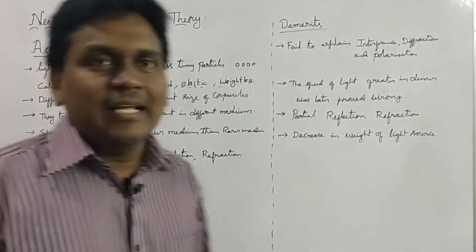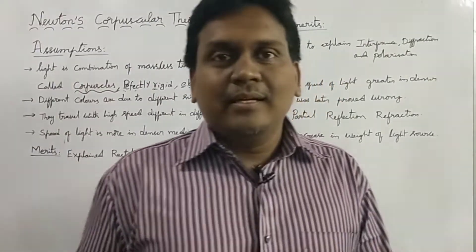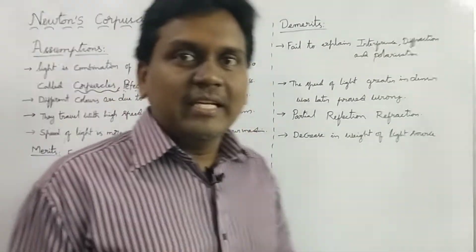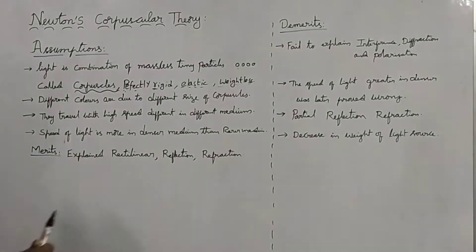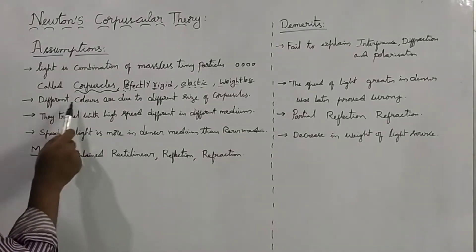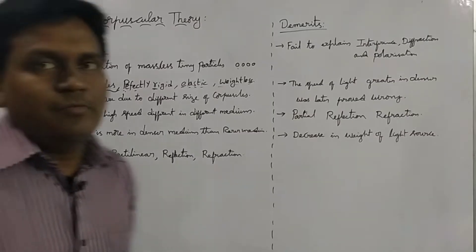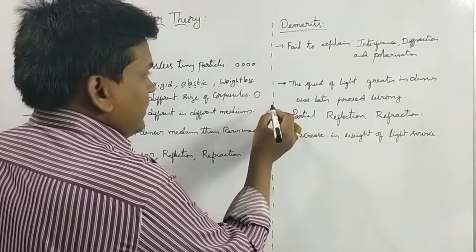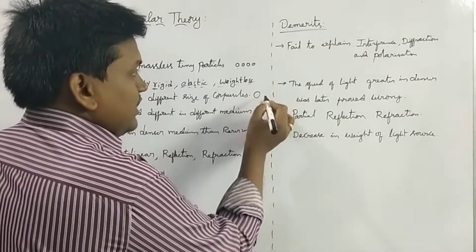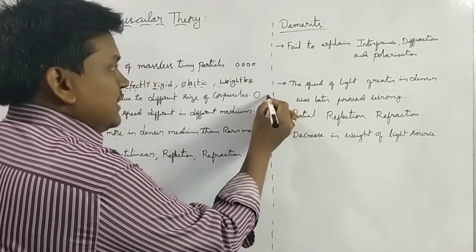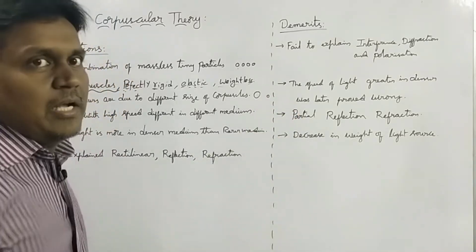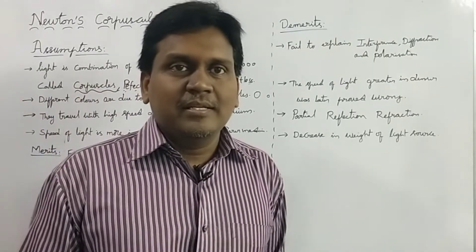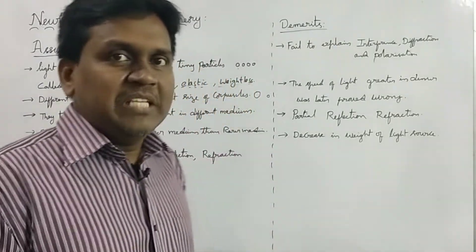Whatever he is considering the light as corpuscles, the corpuscles are weightless — he assumed that they are not having any weight. Coming to the next assumption: different colours are due to the different sizes of corpuscles. For example, a big light particle is having one colour, and a small light particle — which is called a corpuscle — will have another colour. So due to the variation in the sizes, the colour also varies.